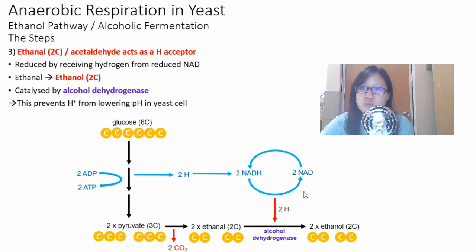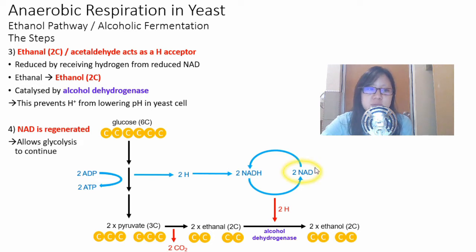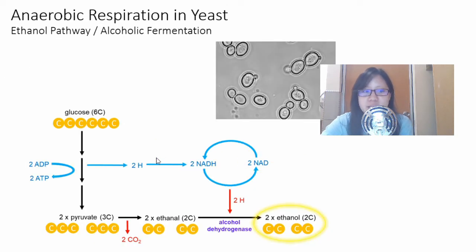This also prevents the H plus from lowering pH in yeast cells. If these hydrogen atoms were to freely float around the yeast cell, it's going to make the yeast cell more acidic, and this will cause its enzymes to change in shape. The ethanal receives that hydrogen and becomes ethanol. NADH is regenerated as a result. This will allow glycolysis to continue. You can continue to have glycolysis for a while to produce two ATP per glucose molecule.